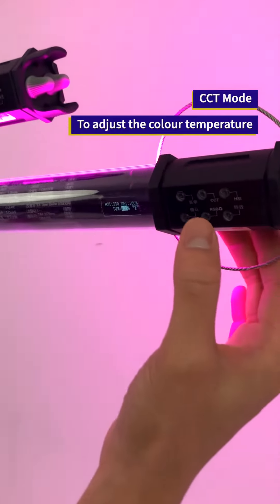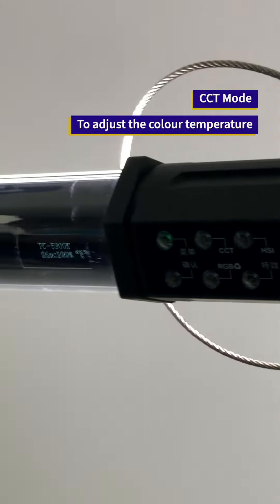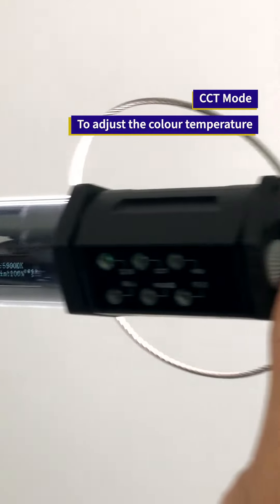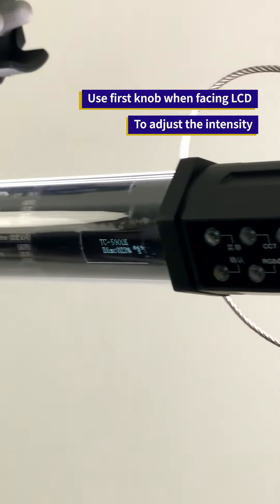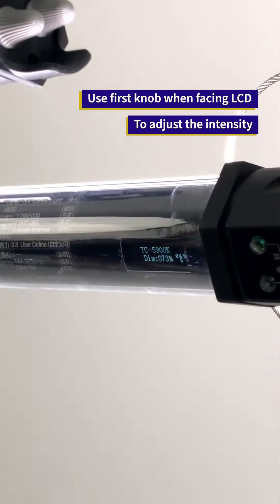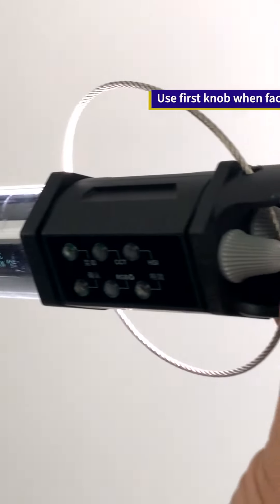There are two functions you need to know on this light unit. First one is CCT, which is for color temperature. Using the first knob, I can adjust my intensity of the light. The second knob will adjust my color temperature.